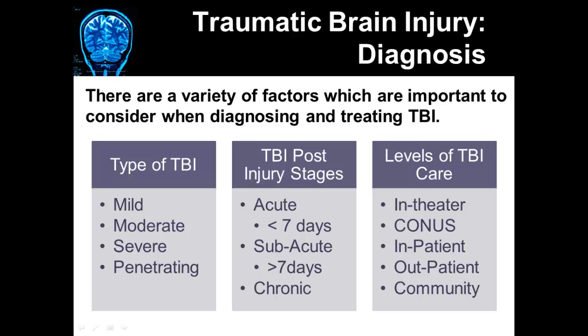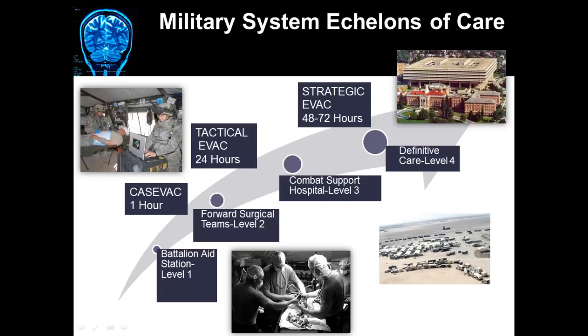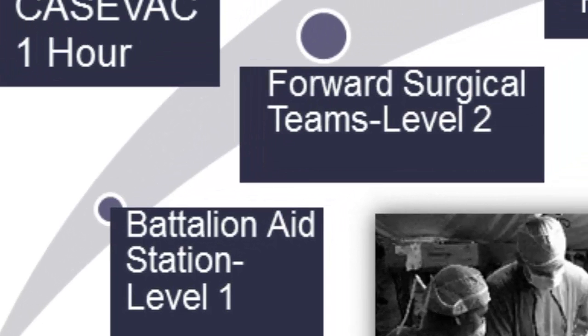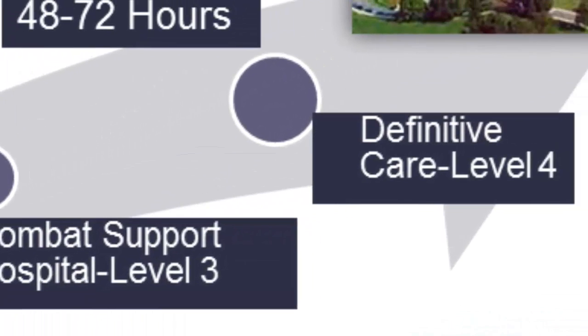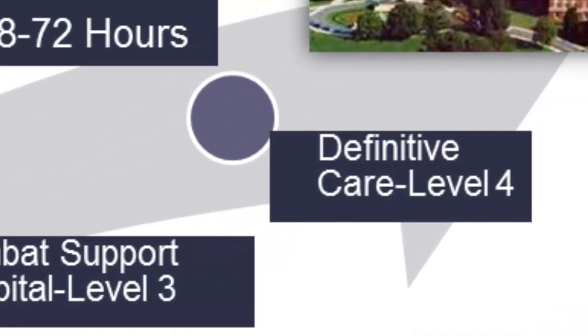Now I'm going to go over the different military levels of care. If you look at the lower part of the arrow on this slide, you can see four levels of care: the Battalion Aid Station Level 1, the Forward Surgical Team which is Level 2, the Combat Support Hospital Level 3, and Definitive Care which is Level 4.